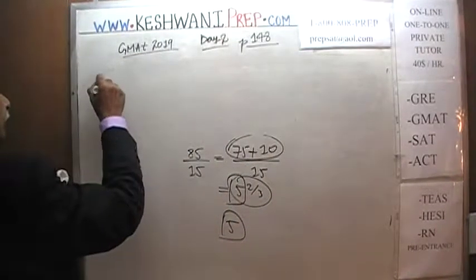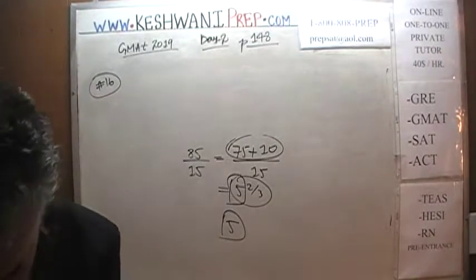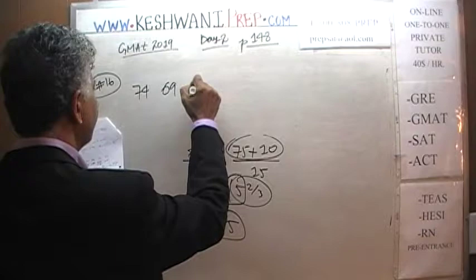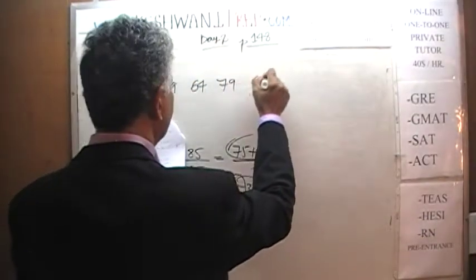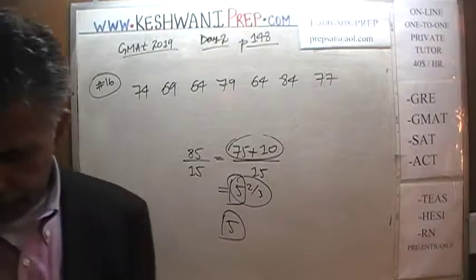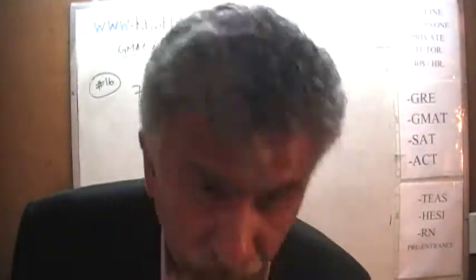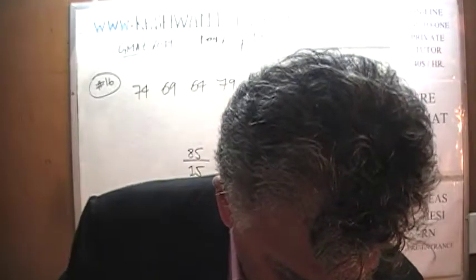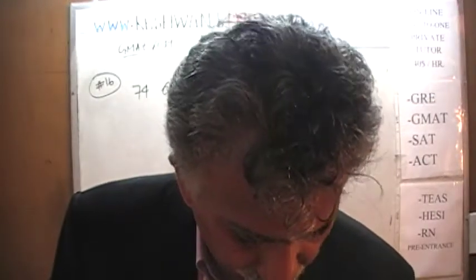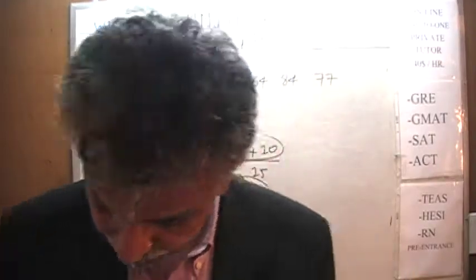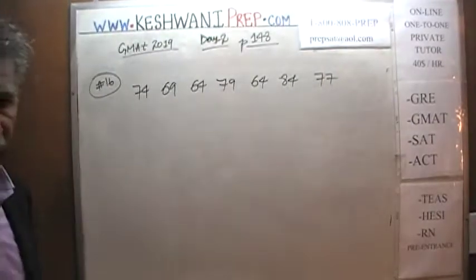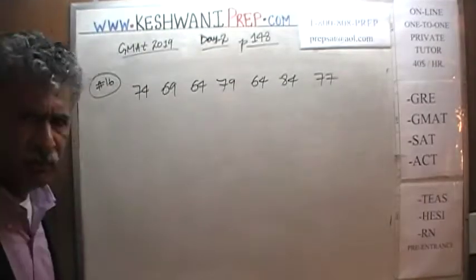Number 16 says we simply have to find the average of these numbers: 74, 69, 64, 79, 64, and 77. Over the past seven weeks, the Smith family had a weekly grocery bill of these amounts. The question is what is Smith's average grocery bill over that seven-week period? We can add them all up and divide by seven, the classical way — but I'm just going to pretend that the average is 70. It looks like around 70.